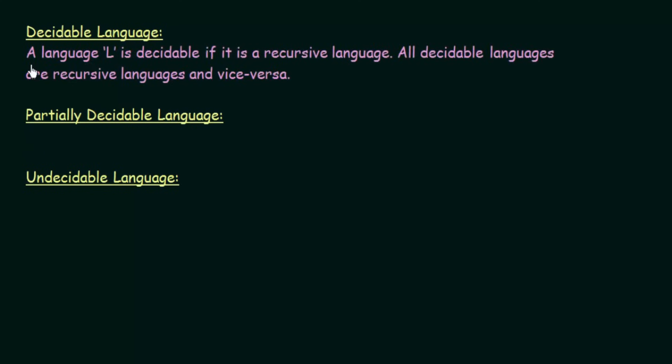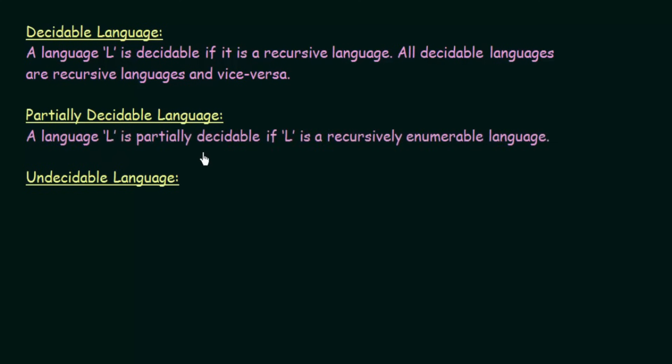A language L is decidable if it is a recursive language — all decidable languages are recursive languages and vice versa. So if you pass any string to the Turing machine and it always halts by either accepting or rejecting, that language is decidable. A language L is partially decidable if it is a recursively enumerable language, meaning the Turing machine will sometimes halt and sometimes not halt. Those languages are known as partially decidable languages.